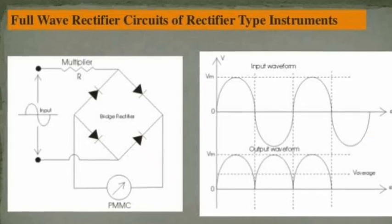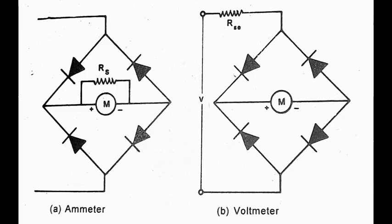This is a bridge rectifier working with the Rectifier type instrument. We use the ammeter and voltmeter. We use the PMMC meter in parallel with resistance for the voltmeter, and we use the bridge rectifier with the PMMC instrument and resistance for the Rectifier type ammeter and the Rectifier type voltmeter.